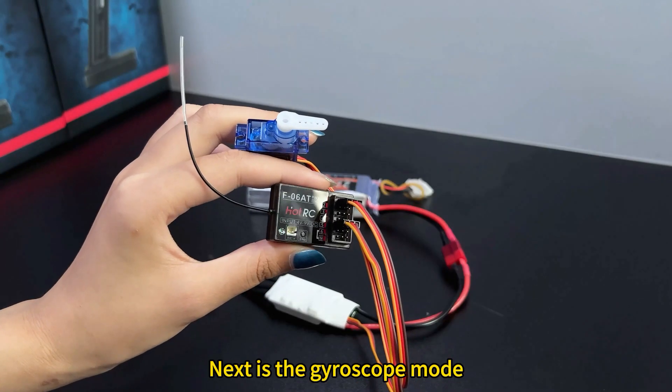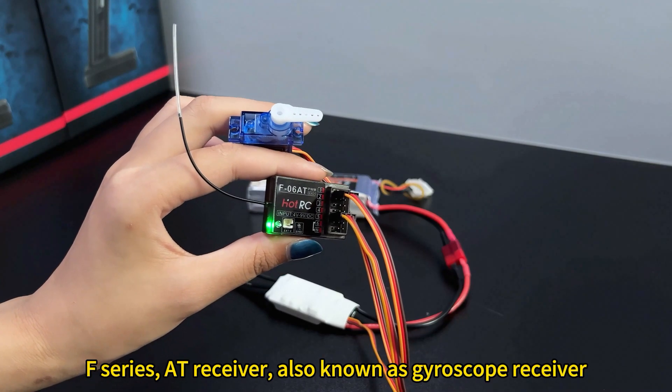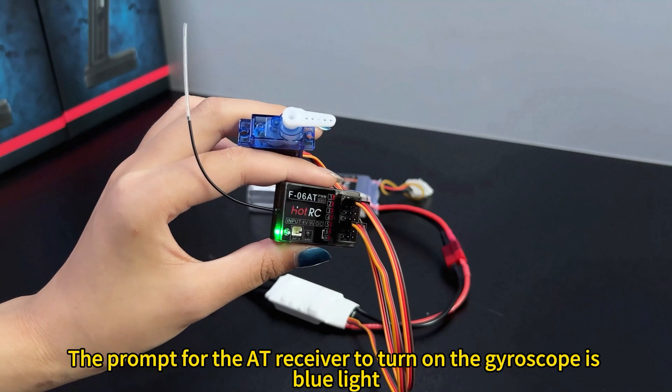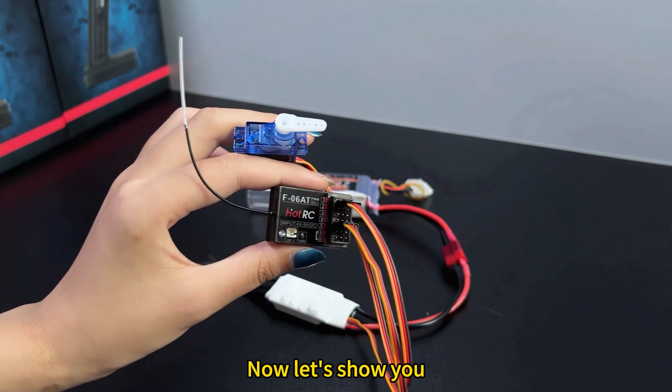Next is the gyroscope mode. F-Series at receiver, also known as gyroscope receiver. How to set the servo mode? The prompt for E8 receiver to turn on the gyroscope is blue light. Now let's show you.